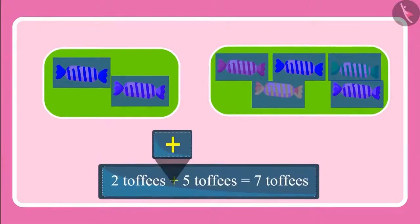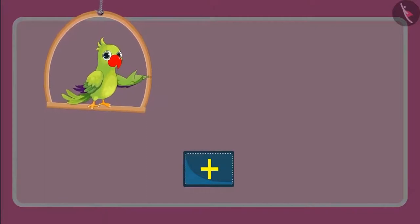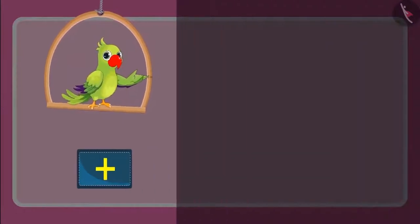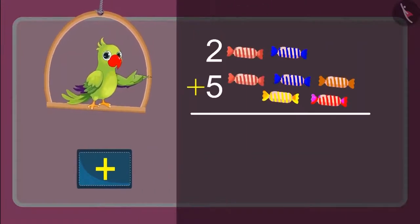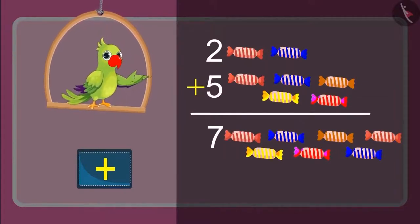Children, do you know what symbol this is? Yes, this is the symbol of addition. We can write it in one more way. This means when we added five toffees to two toffees, then we got seven toffees. You also got the same answer, right? Excellent!